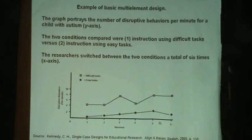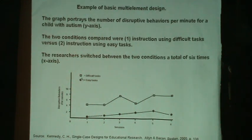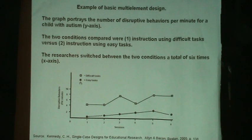Let's take a look at an example. The graph portrays the number of disruptive behaviors per minute for a child with autism. The y-axis shows number of disruptive behaviors, going from 0 to 10. There are two conditions being compared: instruction using difficult tasks and instruction using easy tasks, marked by the solid black circle. The researchers switched between the two conditions a total of six times.